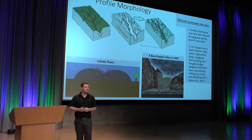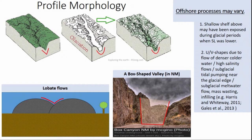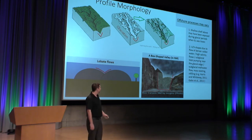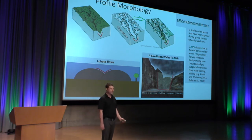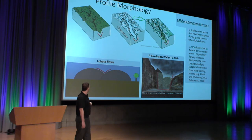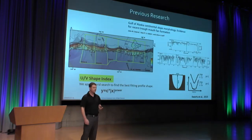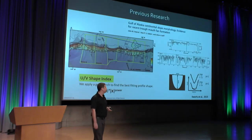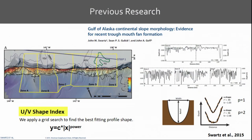This led me to the other part of the project: profile morphology. It's pretty textbook that rivers tend to create V shapes and glaciers tend to create U shapes onshore. Offshore processes can be a little bit different. A lot of this was inspired by previous research by collaborator John Swartz at University of Texas. He did a study looking at the shape index of profiles — essentially whether they're U or V shaped — taking a profile across the mid-slope in the Gulf of Alaska.